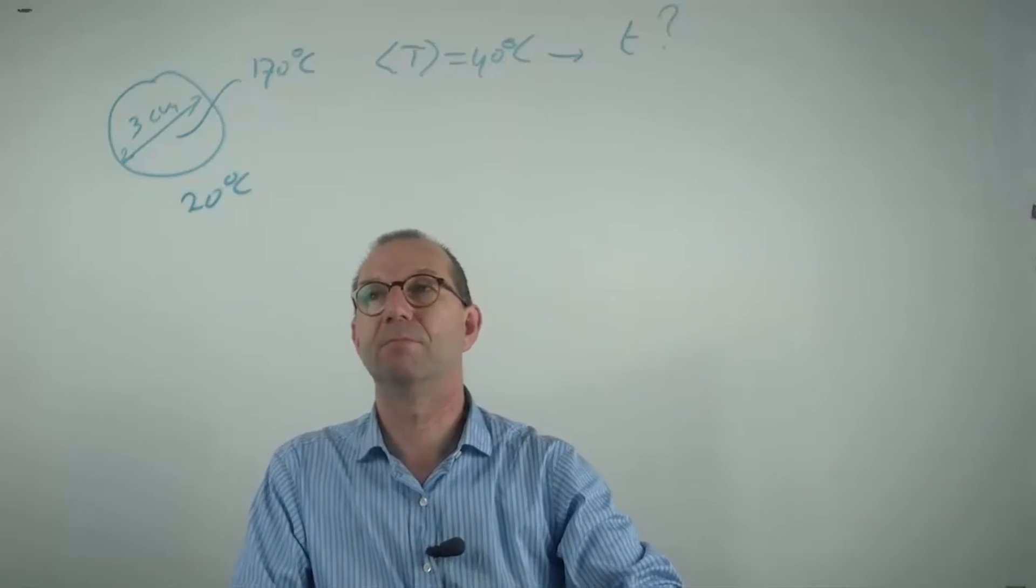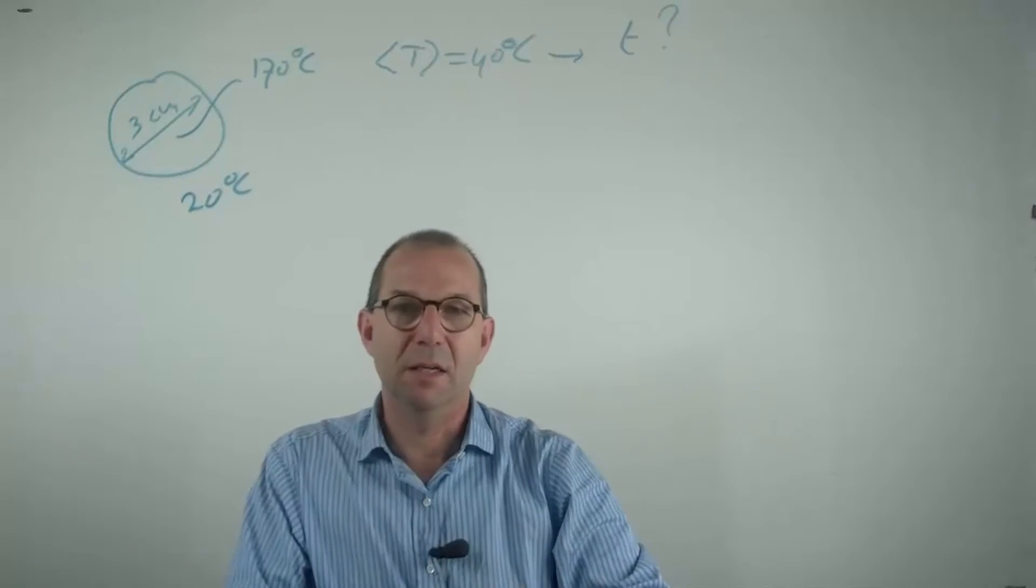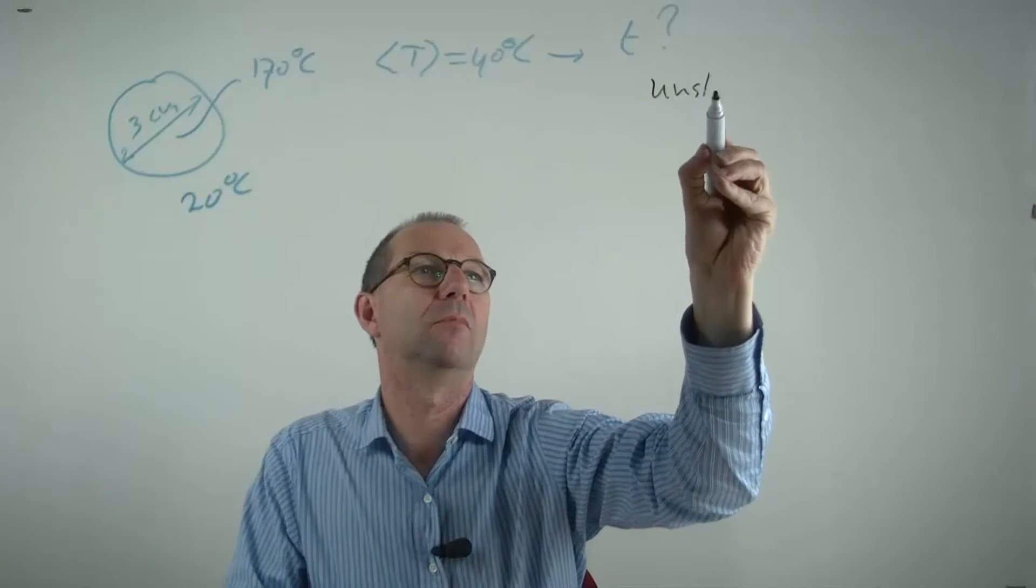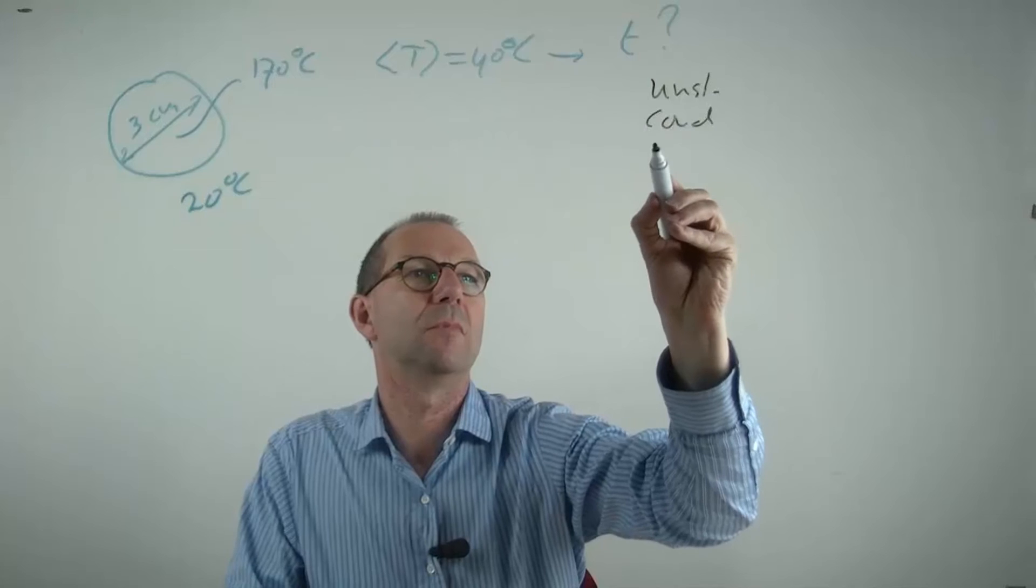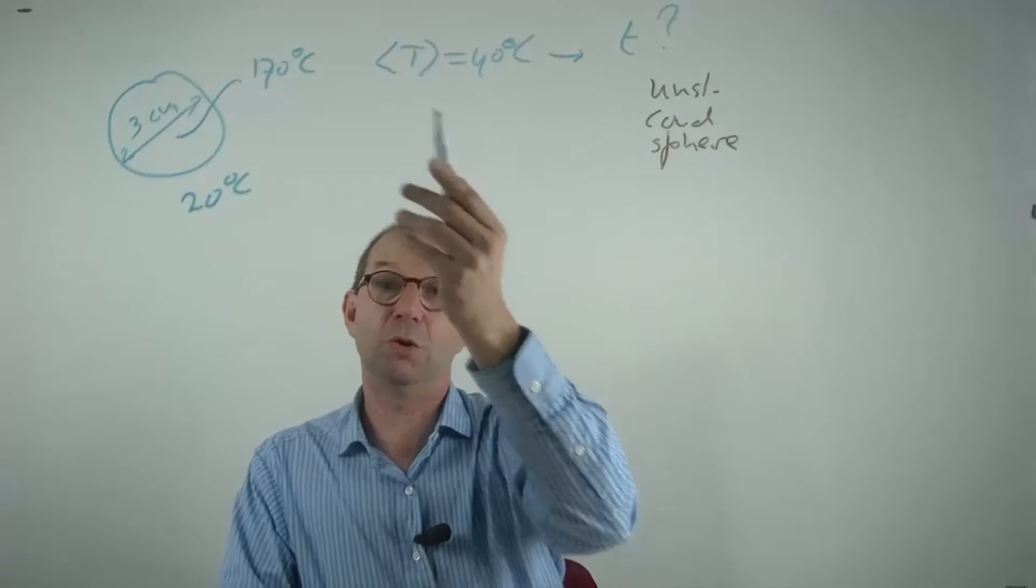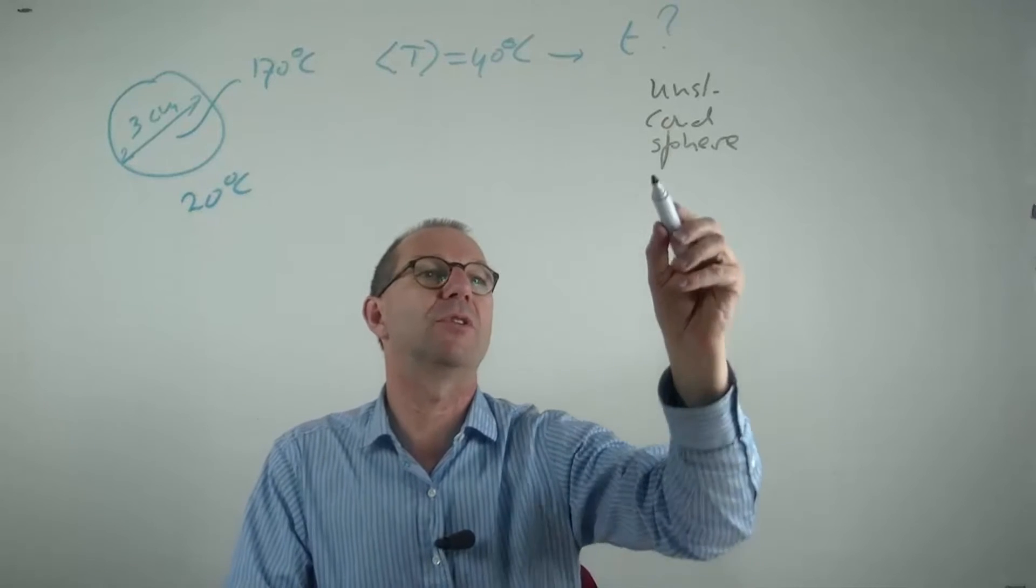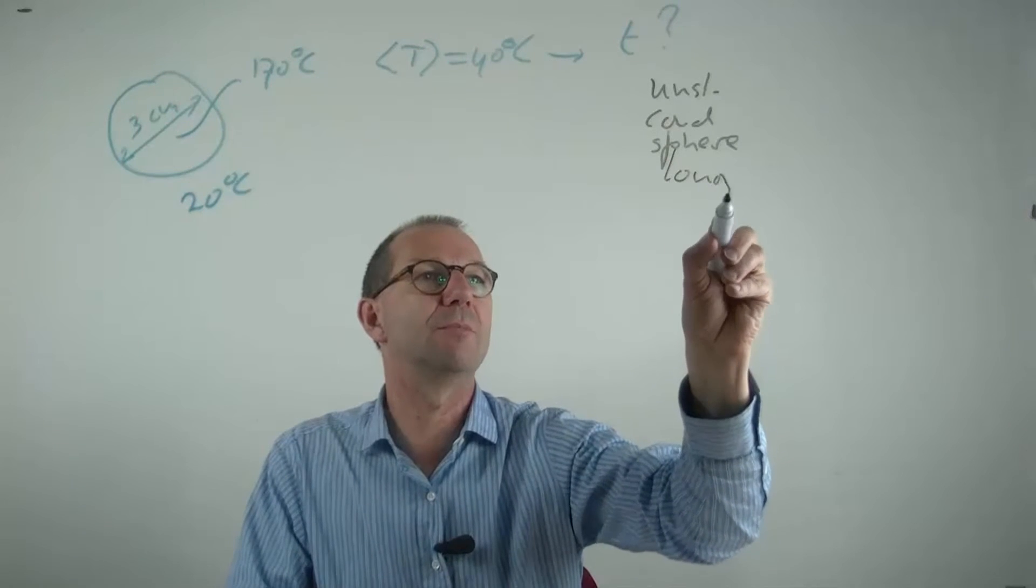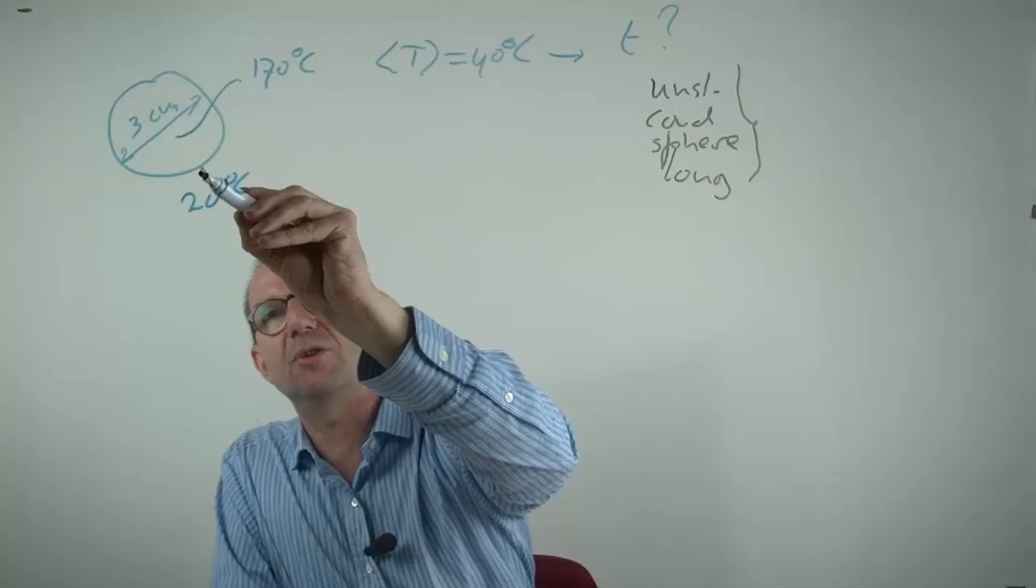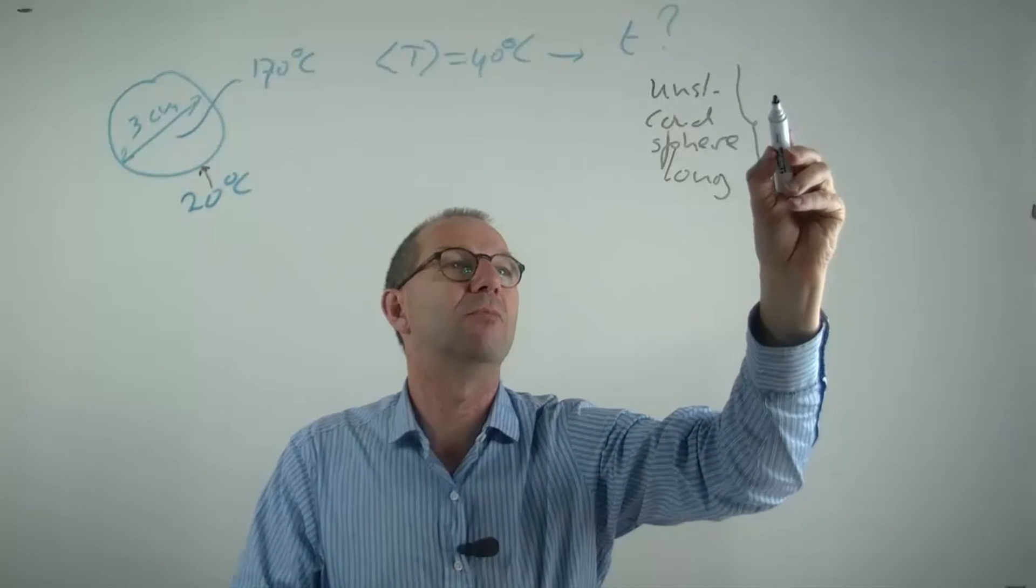To make our estimates, what do we know? Heat conduction on the inside, unsteady, sphere. Short or long times? Long times. The starting temperature has disappeared when you reach these average temperatures. We're going to assume that this temperature reaches all the way up to the interface. In that case, we can use the graphs: dimensionless temperature against dimensionless time.